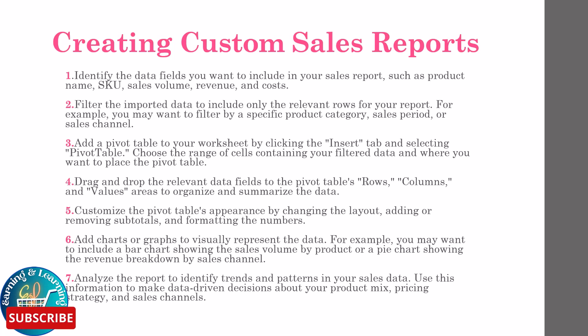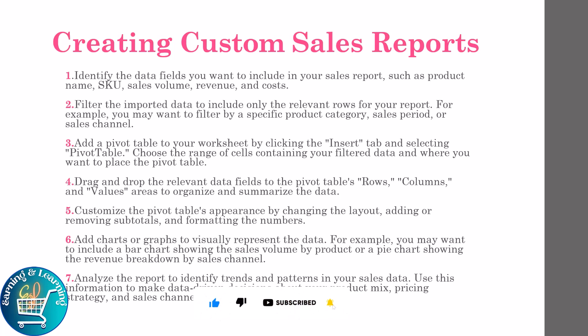Add a pivot table to your worksheet by clicking the Insert tab and selecting PivotTable. Choose the range of cells containing your filtered data and where you want to place the pivot table. Drag and drop the relevant data fields to the pivot table's Rows, Columns, and Values areas to organize and summarize the data.